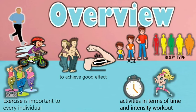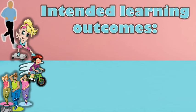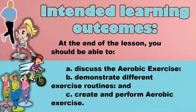Intended learning outcomes, ELOs. At the end of the lesson, you should be able to: A. Discuss the aerobic exercise; B. Demonstrate different exercise routines; and C. Create and perform aerobic exercise.